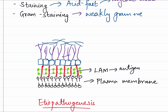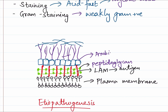We will understand what they do when we speak about the pathogenesis. As we know, for Gram-positive organisms there is a thick peptidoglycan layer, which is also present in Mycobacteria. On top of it, we have an Arabinogalactan layer, and this Arabinogalactan provides structure to the cell wall. And finally, we have the mycolic acid layer.